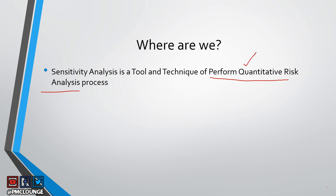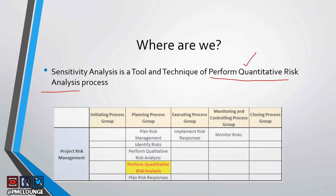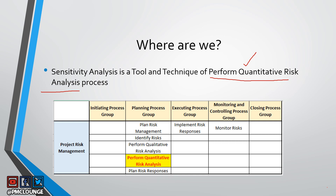Here is the PGKA, or process group knowledge area mapping. The knowledge area we are talking about is Project Risk Management. The process group is the Planning Process Group, and the process in question right now is Perform Quantitative Risk Analysis. Sensitivity analysis is a tool and technique under this process.